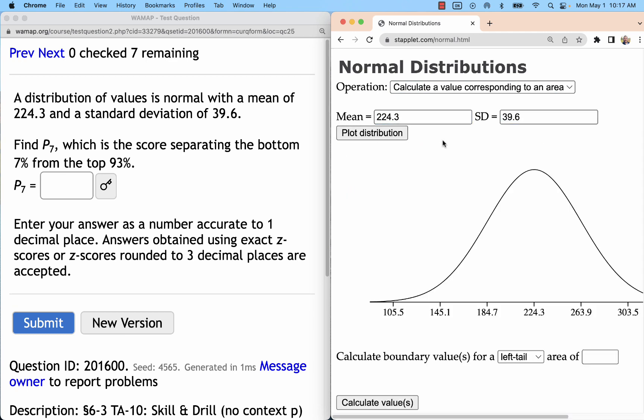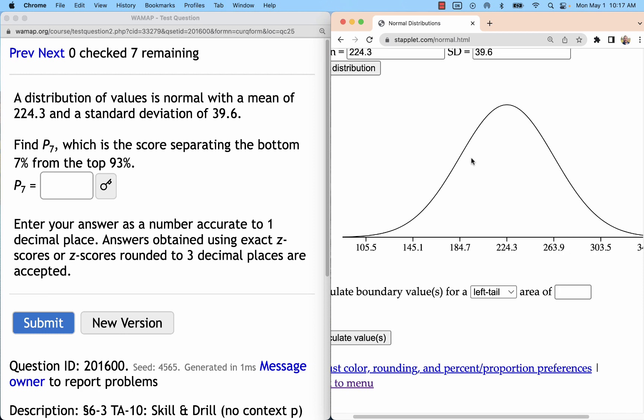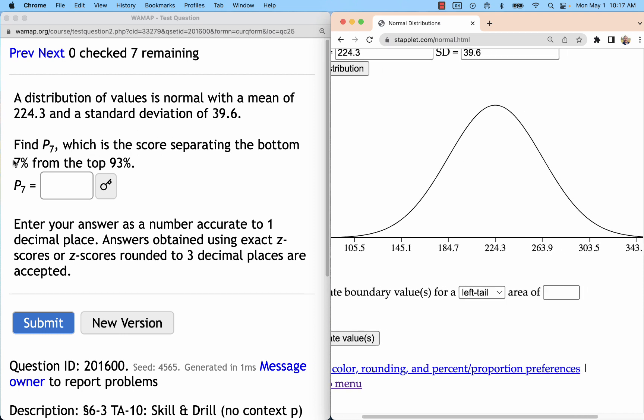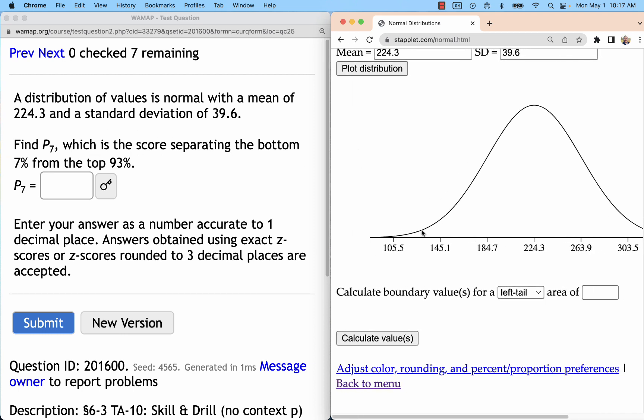Plot the distribution and first get a general sense of what you think the answer should be. This is going to be the bottom seven percent, so that's a small area we call that a tail on the left side and a large shaded region going to the right.